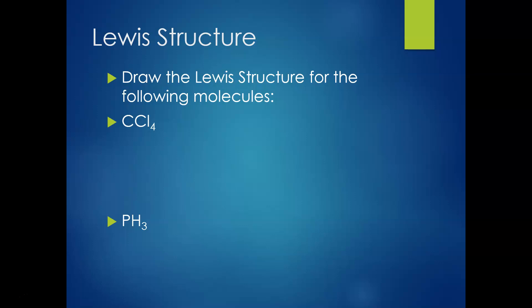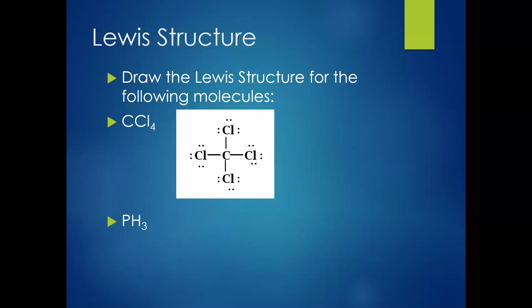Let's see how you did. For CCl₄, you should have gotten a share of eight, meaning four lines when divided in half. Carbon goes in the center as the first element, with one chlorine off each side symmetrically, and one line drawn to each. That gives carbon the eight electrons it needed. Each chlorine was only sharing two electrons, so we added three pairs — six electrons — of unshared electrons to each chlorine to match the need of eight.